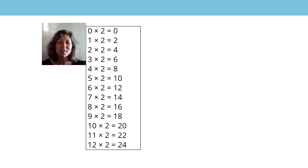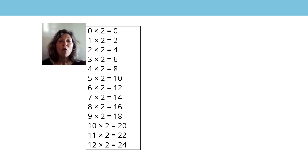Zero twos are zero, one two is two, two twos are four, three twos are, four twos are, five twos are...